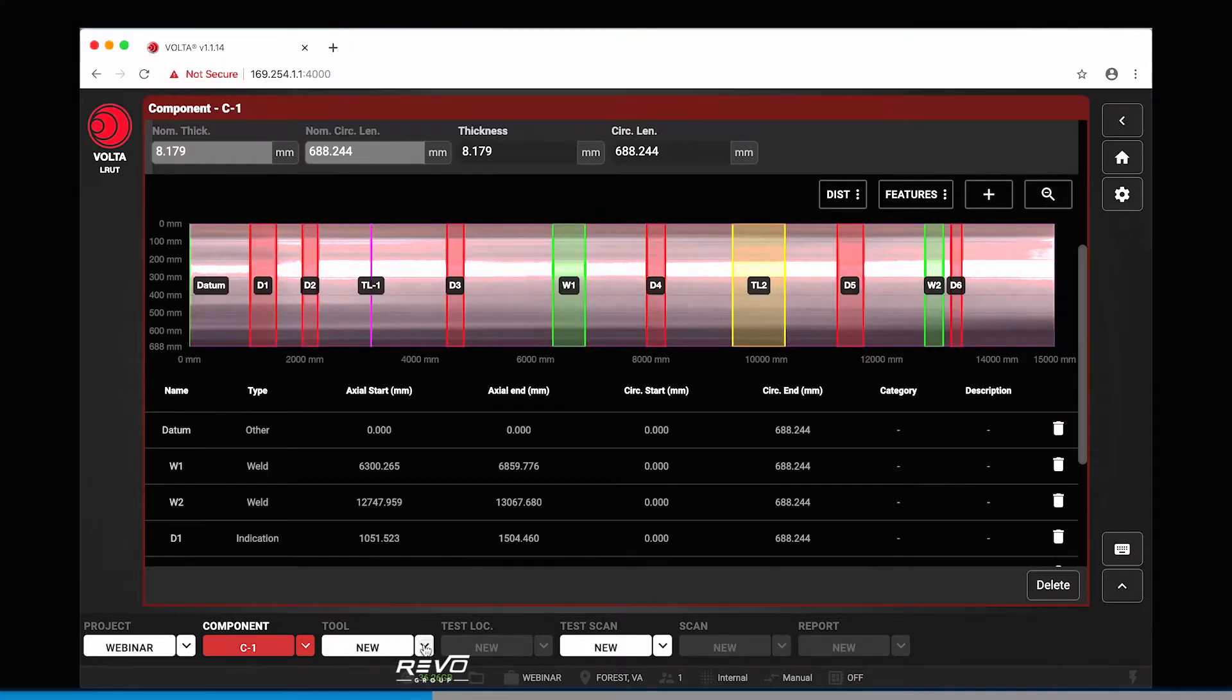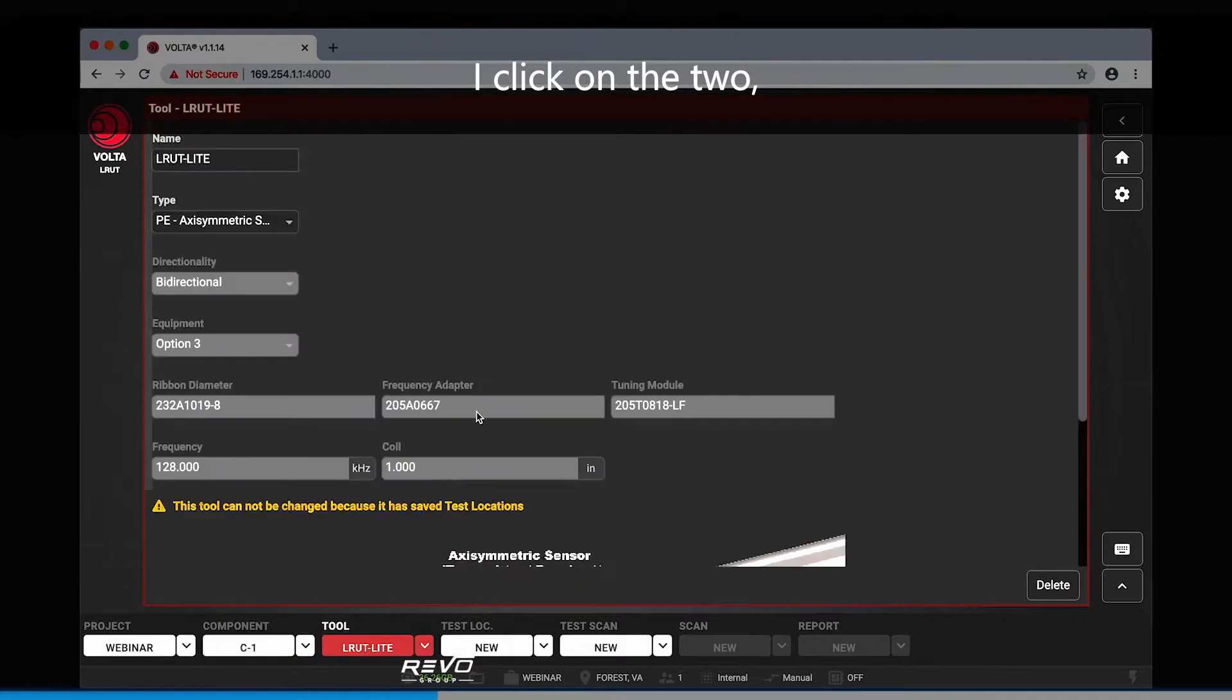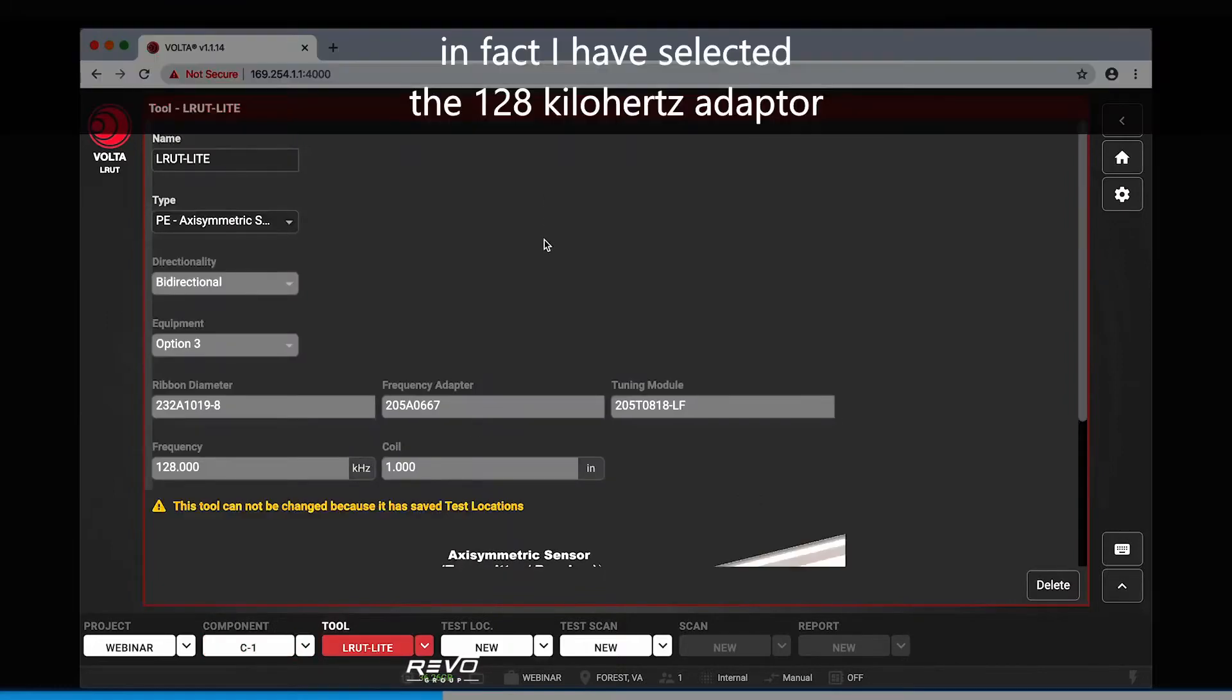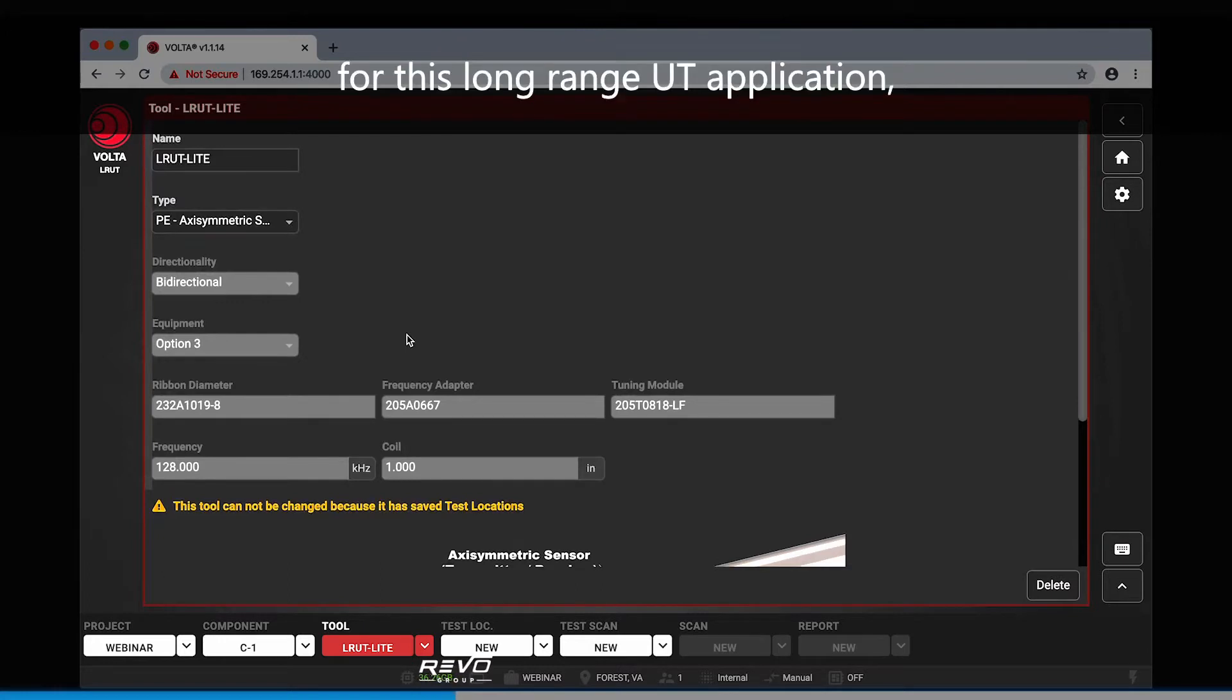From there, I click on the tool. In fact, I have selected the 128 kilohertz adapter for this long range UT application. So this is the adapter that I'm using. The tuning modules have already been put into the Volta itself.